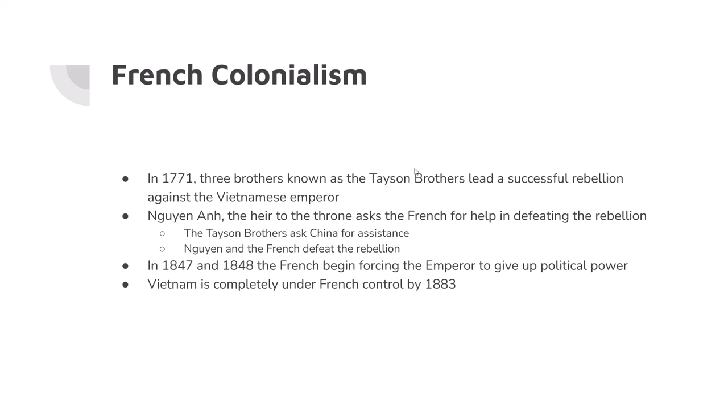Eventually, Vietnam becomes a French colony, going back to 1771. There's a rebellion called the Tay Son Rebellion, and three brothers — the Tay Son brothers — take over the government. The heir to the throne contacts the French, and the French agree to help in exchange for future concessions. In 1847 and 1848, the French begin forcing the emperor of Vietnam to give up power, and slowly but surely Vietnam becomes a colony of France. By 1883, Vietnam is completely under French control, and anti-French movements begin.